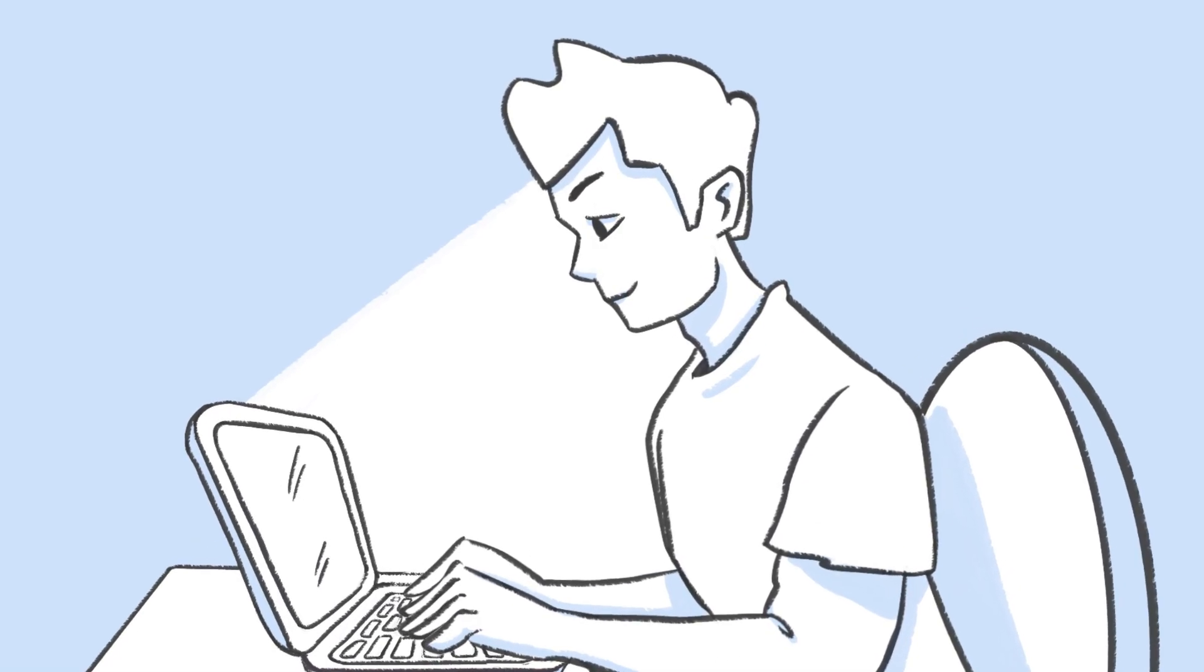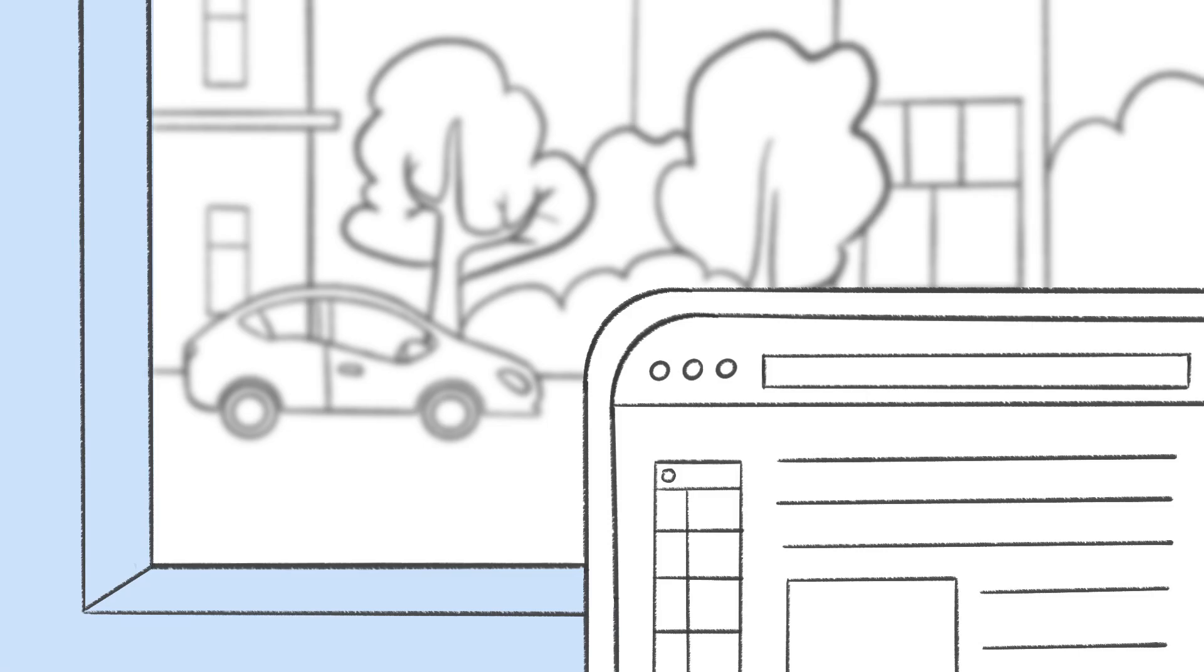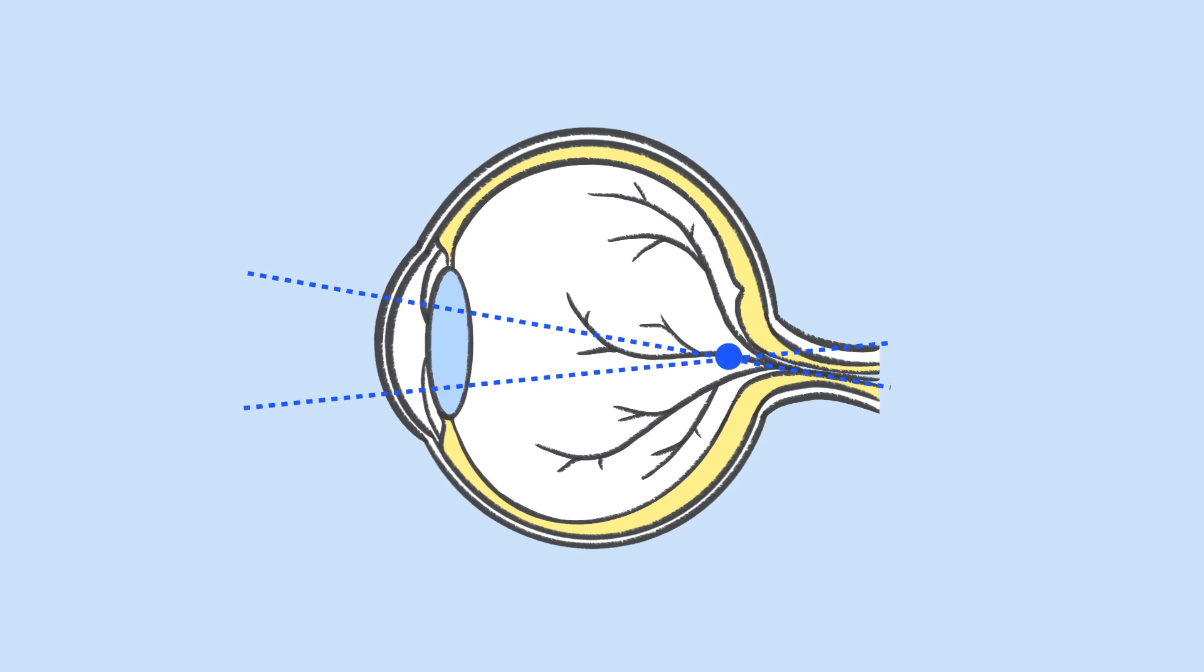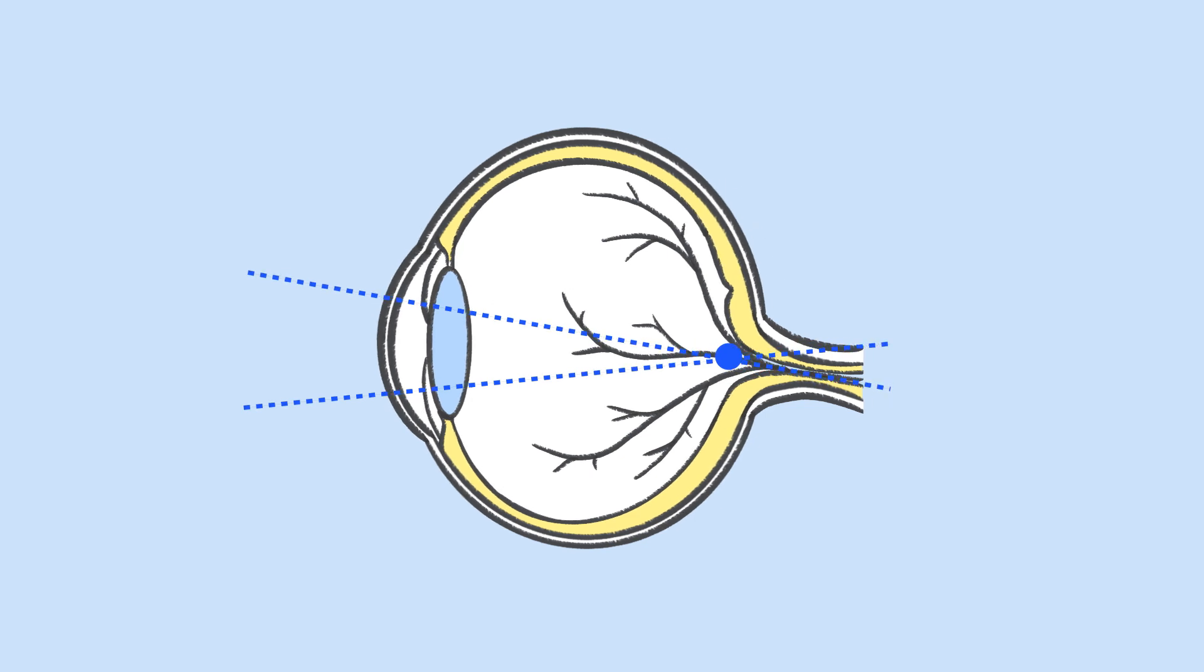Your eyeball is in a constant state of adjustment based on where the light focuses on, in front of, or behind the retina. If light focuses in front of the retina, the eyeball will try to shorten. Axial reduction.